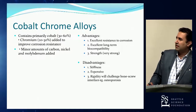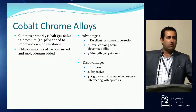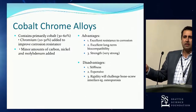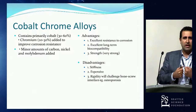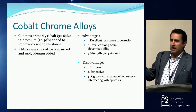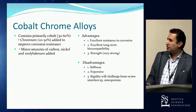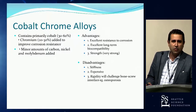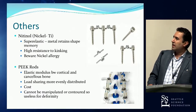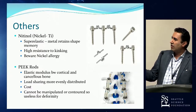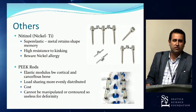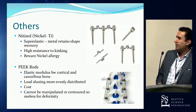Cobalt chrome has a higher elastic modulus — the kind of rod you'd place in a young, healthy patient who can withstand the stiffness. It's stronger than titanium alloy, takes greater force to bend, is stiffer, and less subject to fatigue failure. However, it will challenge the bone-screw interface and can fail in patients with low bone density such as those with osteoporosis. PEEK rods were used for load sharing but are effectively useless for deformity — they can't be manipulated or contoured and have largely fallen out of favour.